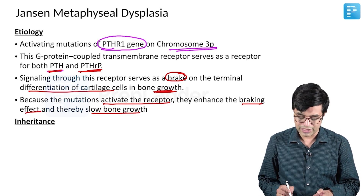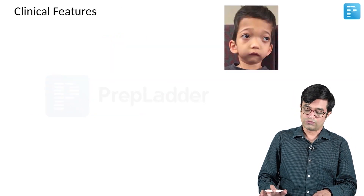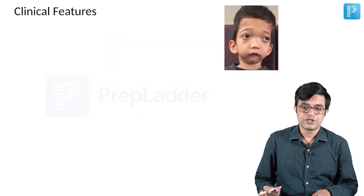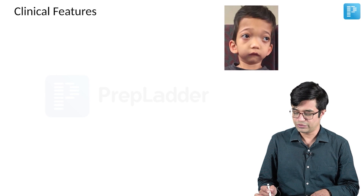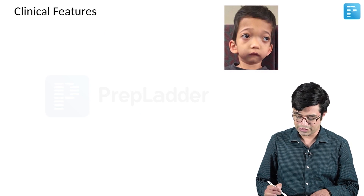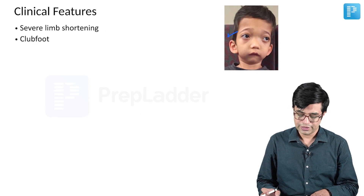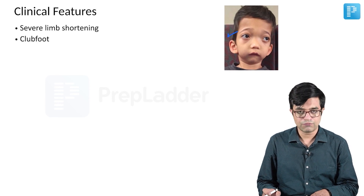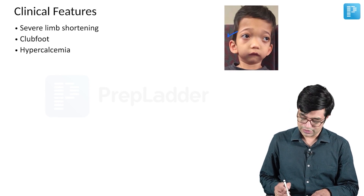Regarding inheritance, this is also an autosomal dominant condition. Clinical features include: on one side you can see the typical face of these children — they have a very peculiar appearance. They have severe limb shortening, they will have clubfoot, and they will have hypercalcemia.